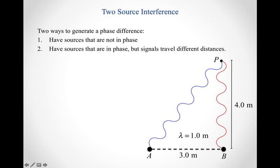As an example, let's say we have two sources, source A and source B. They're separated by three meters, and both of them emit waves that have a wavelength of one meter. The waves from both sources are initially in phase.